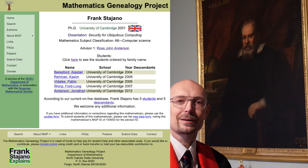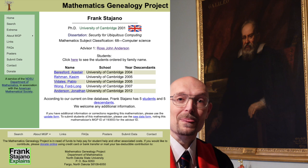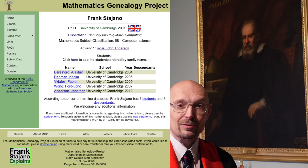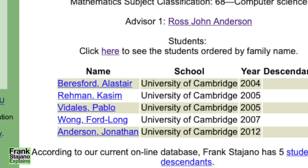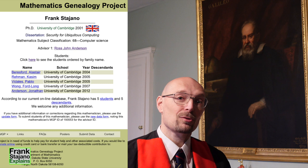I advise several others as well for part of their graduate studies, but of the five students who completed their PhD with me here at Cambridge, four have subsequently earned faculty positions in their respective countries in Europe, South America, Asia, and North America. One of them, Alastair Beresford, is even a full professor here at Cambridge like me. And so obviously all of them and all of their students are also direct descendants of Newton and Galileo.